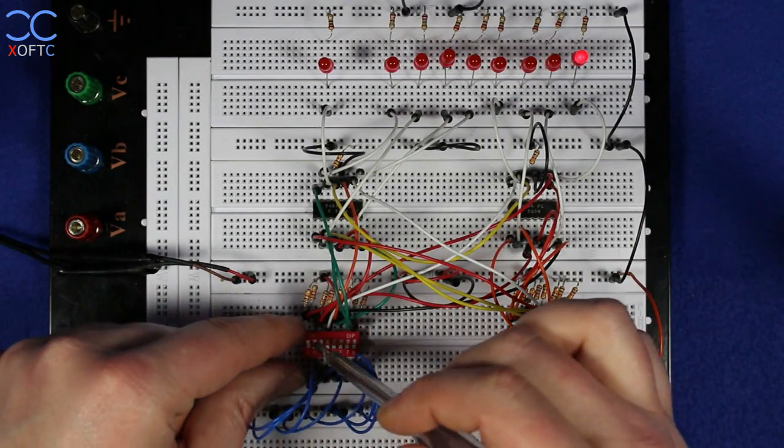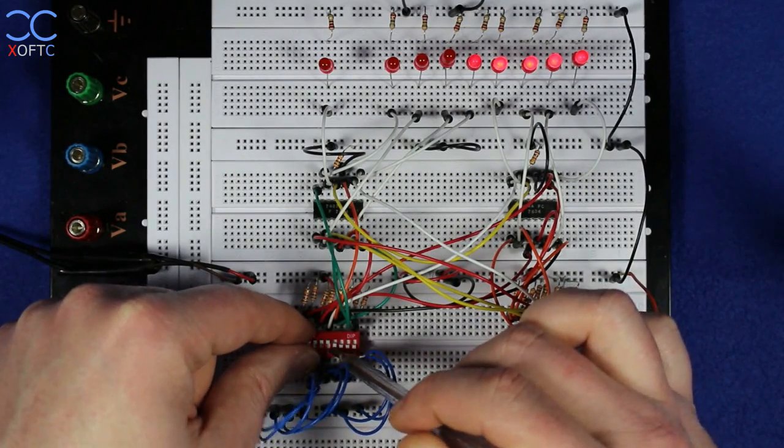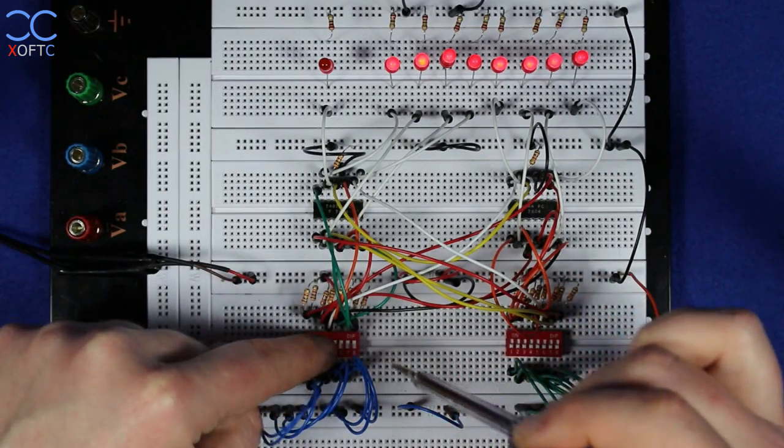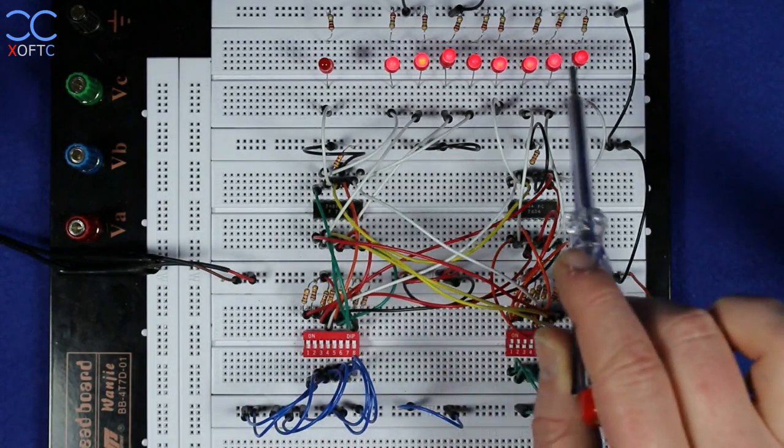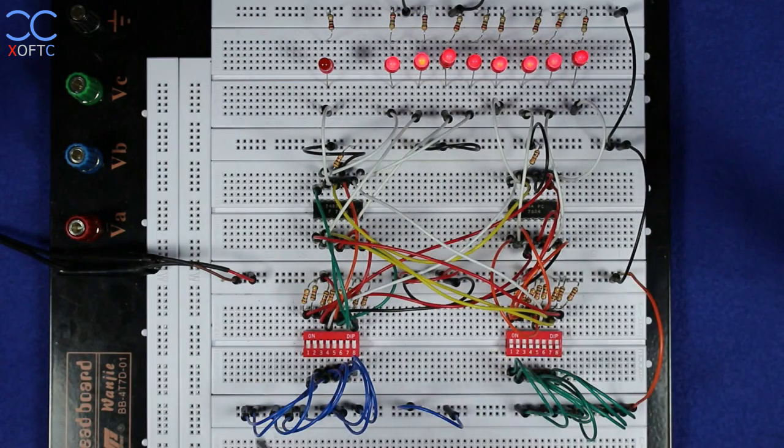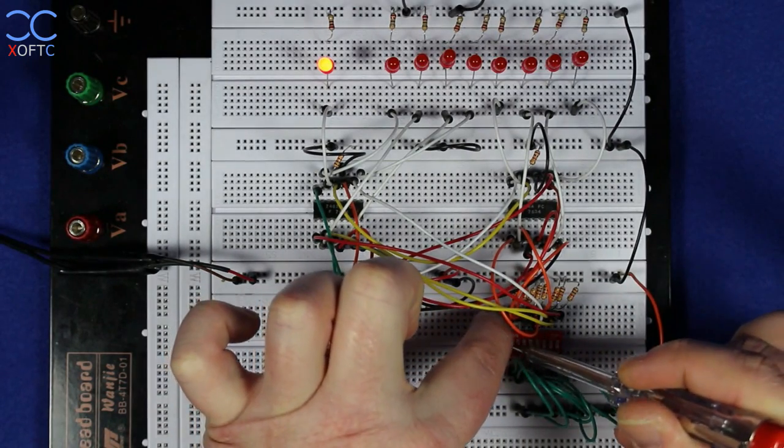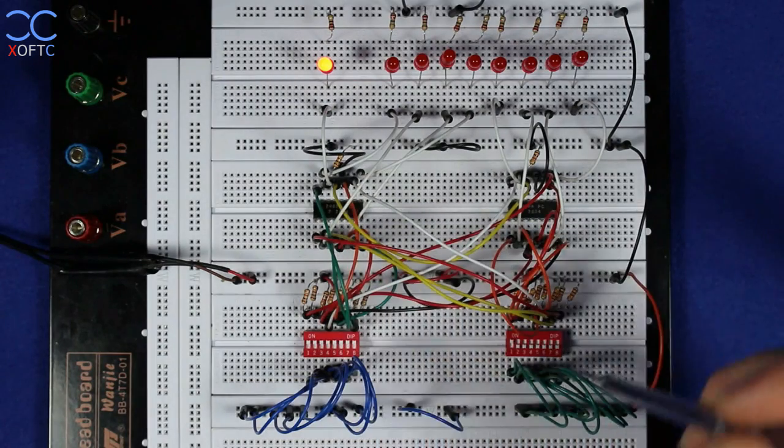Now if I raise all the bits on value A, you can see that here we have the binary value of 255. If I add one, then we get 256.